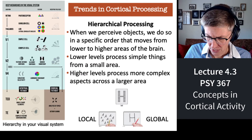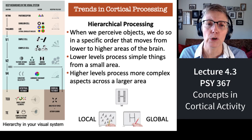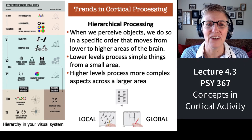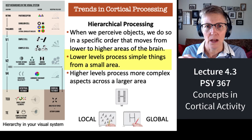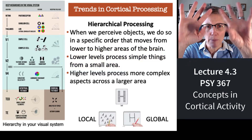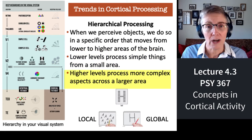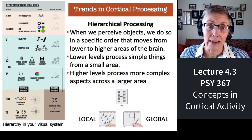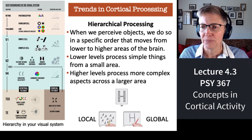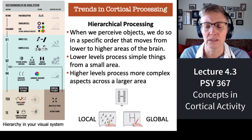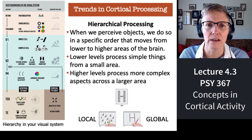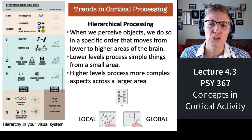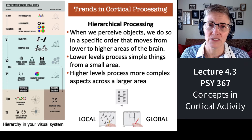Another concept in terms of cortical processing is the idea of a hierarchy. Simple, low-level things happen at the bottom of the hierarchy, and as you move up the hierarchy, things get more complicated, integrated, or holistic. That happens in the human brain. There's a cartoon-like drawing on the left side of your slide here to try to illustrate this.